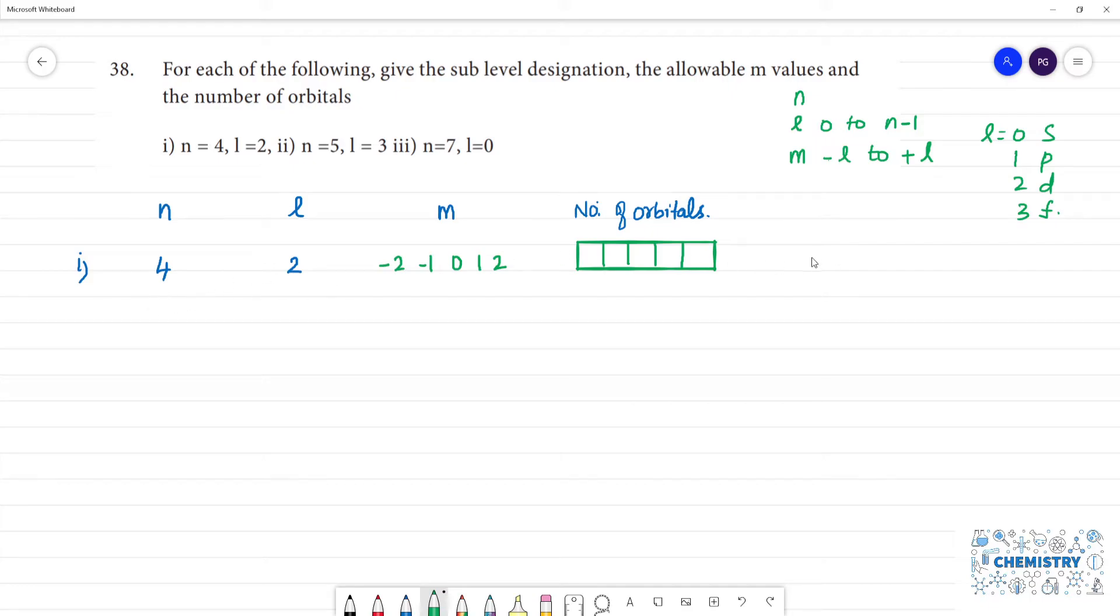This is the designation, sub-level designation: n value 4, l value 2, it is 4d.